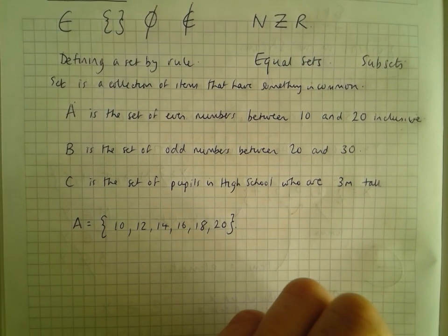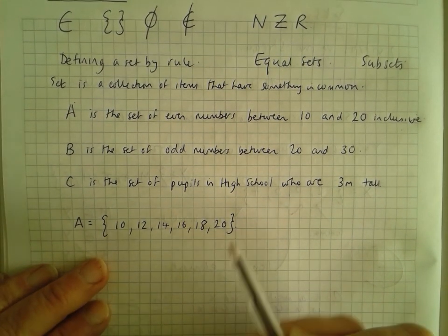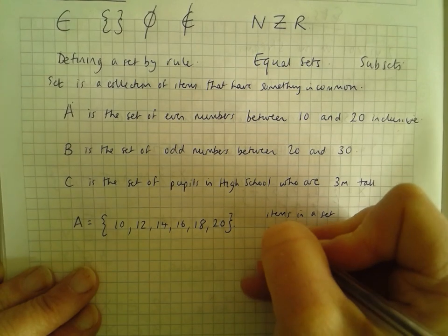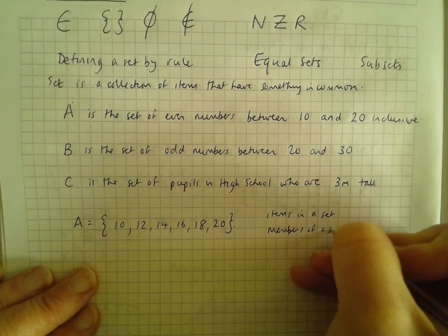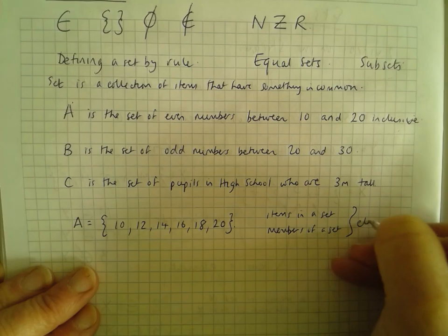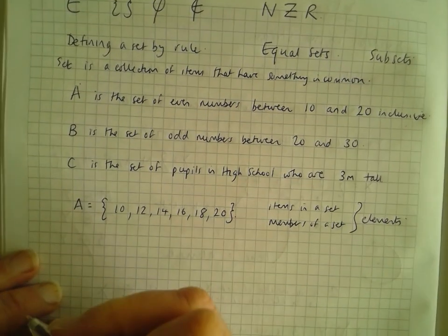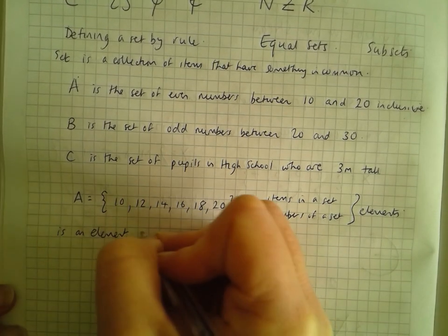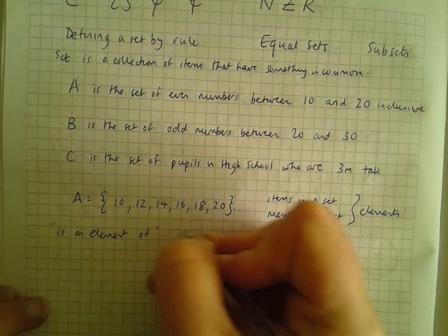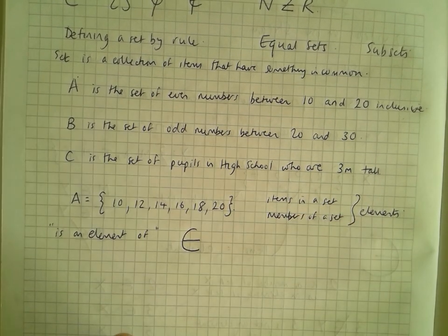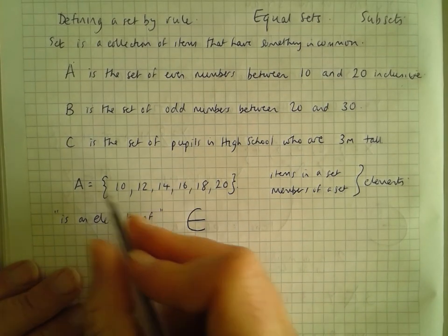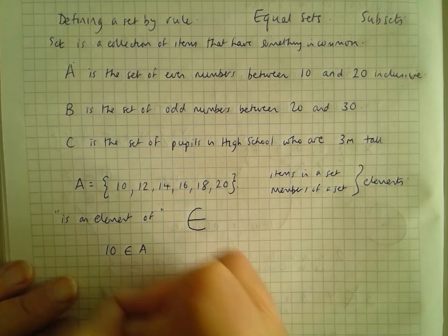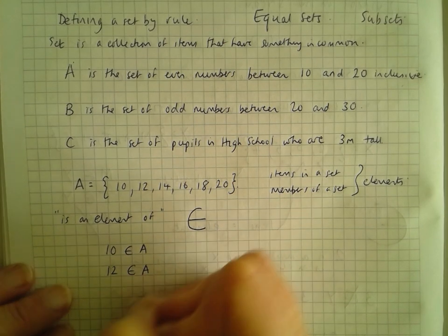The items in a set, or the members of a set, are called elements. The way we write that — 'is an element of' — we use this symbol that looks like a euro symbol, a kind of E. So if I wanted to say that 10 was in set A, I would say 10 is an element of A. Or I could say 12 is an element of A, 18 is an element of A.